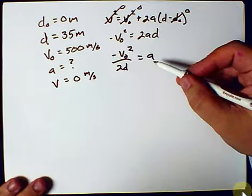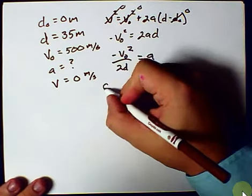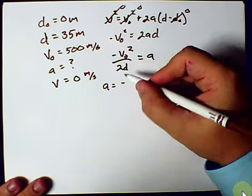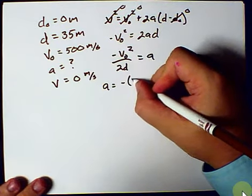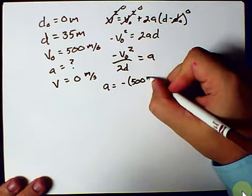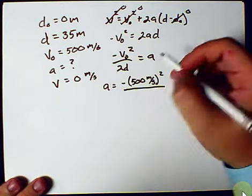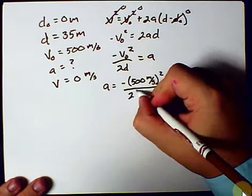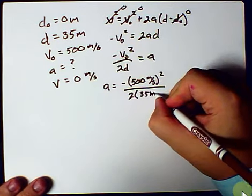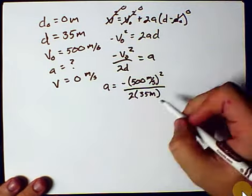So there's my acceleration. Let's plug in the numbers. a equals negative v naught squared, so 500 meters per second squared divided by 2 times 35 meters.